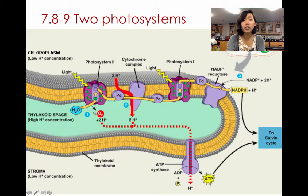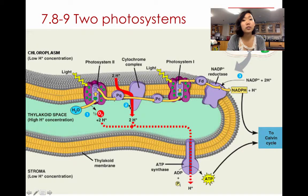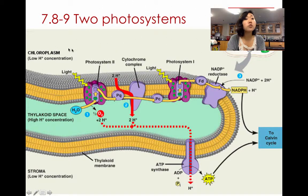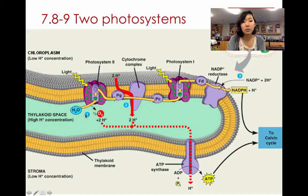Now this electron continues down an electron transport chain, very similar in concept to the electron transport chain we saw in cellular respiration. Here it's just going down from protein to protein. As it does that, it generates enough energy for protons to move from the stroma inside the chloroplast and push the protons into the thylakoid space. So this thylakoid space is very high in proton concentration, similar in function to the intermembrane space of the mitochondria.